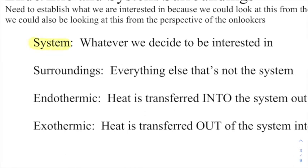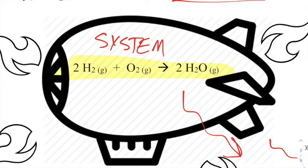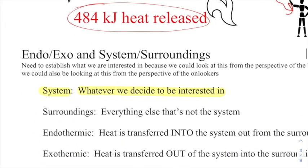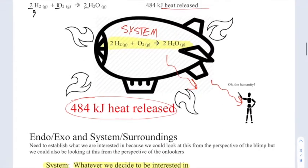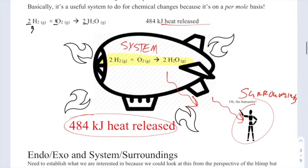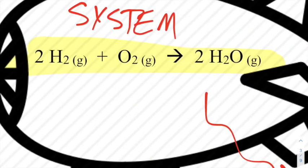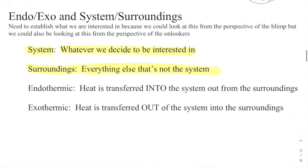The first term is system. The system is whatever we decide to be interested in. If I am interested in the Hindenburg reaction taking place, then I establish that as my system. Everything else that is not the system is the surroundings. So the person watching is part of the surroundings; the air and everything else out here is the surroundings. The system is usually the balanced equation — the chemical change — that we are investigating.